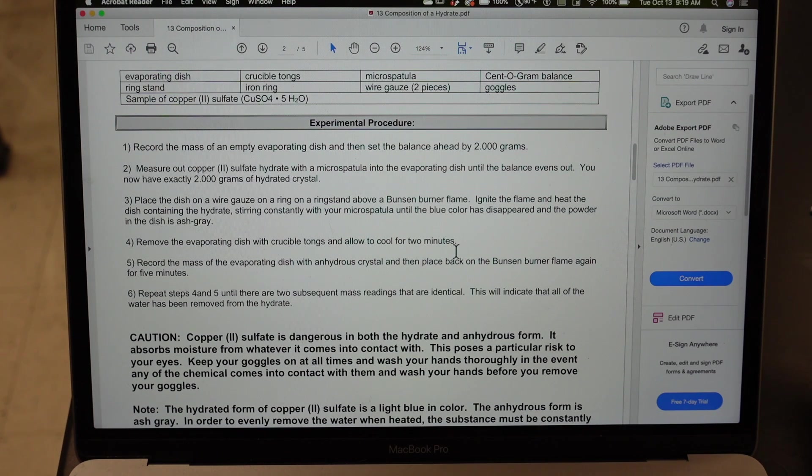Place the dish on a wire gauze on a ring stand above a Bunsen burner flame. Ignite the flame and heat the dish containing the hydrate, stirring constantly with the micro spatula to get rid of all the water until the blue color has disappeared and the powder in the dish is ash gray.